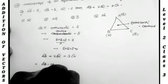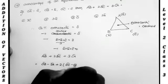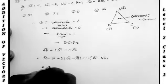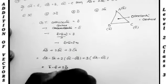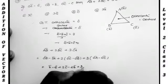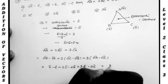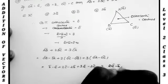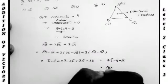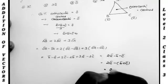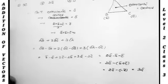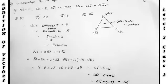We find AB bar plus 2 into BC bar plus 3 into CA bar. AB bar equals OB minus OA, BC bar equals OC minus OB, CA bar equals OA minus OC. Substituting: B bar minus A bar plus 2C bar minus 2B bar plus 3A bar minus 3C bar equals 2A bar minus B bar minus C bar, which is 2A bar minus of B plus C. Since B plus C equals minus A bar, the answer is 2A bar minus minus A bar, giving 3A bar — the second option.